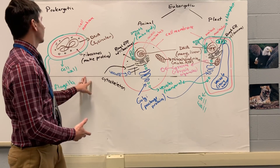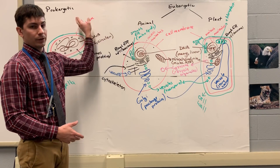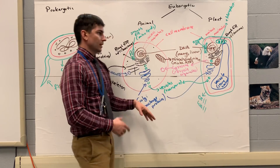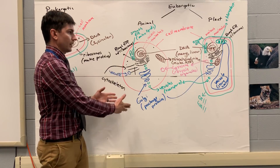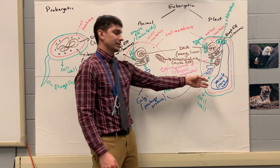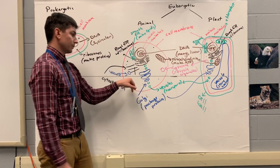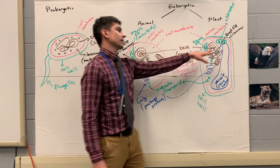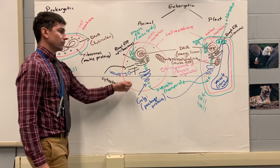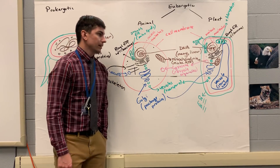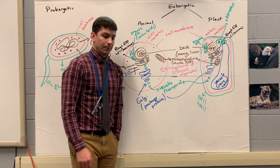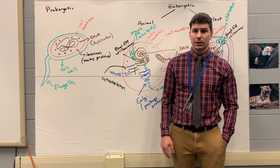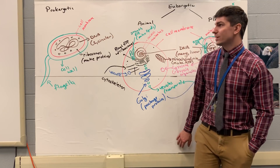That's all of our main organelles. Make sure you know your differences between prokaryotic cells and eukaryotic cells, and the differences between animal cells and plant cells. Plant cells are square; animal cells are round. Animal cells have the cytoskeleton; plant cells have a large vacuole instead. The plant cell has the chloroplast — the mitochondria does not. Those are your main differences. We're going to start module one, section two next video.